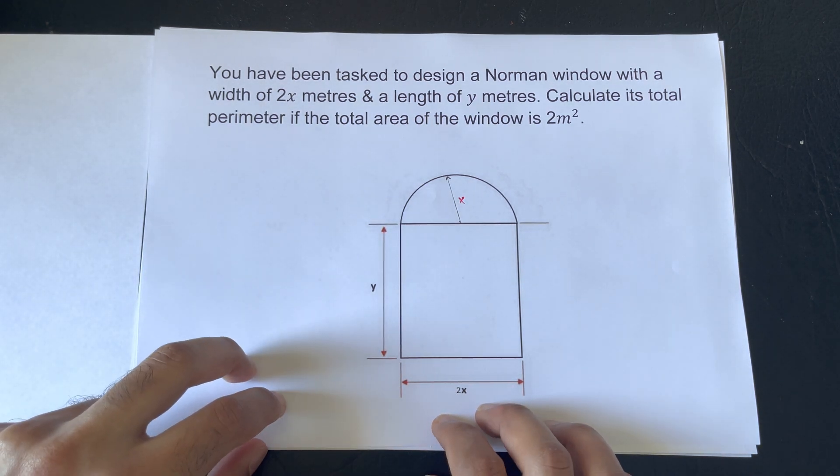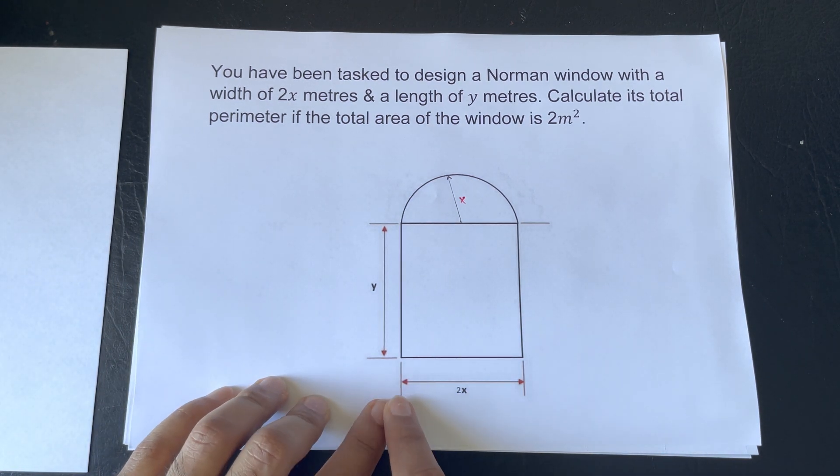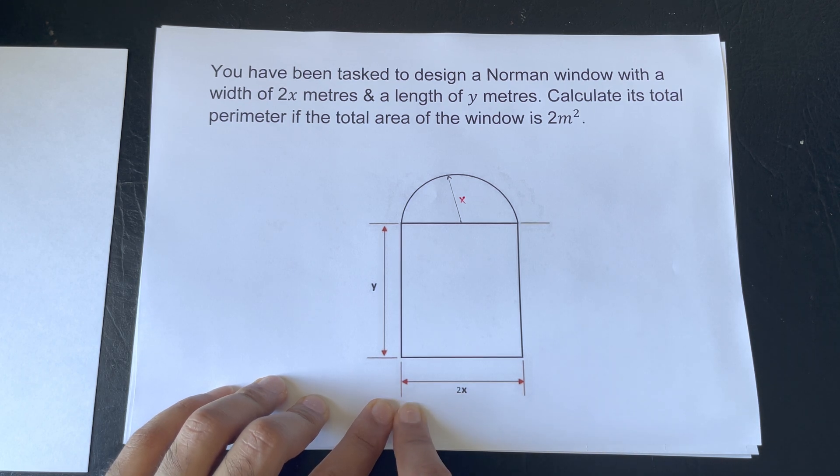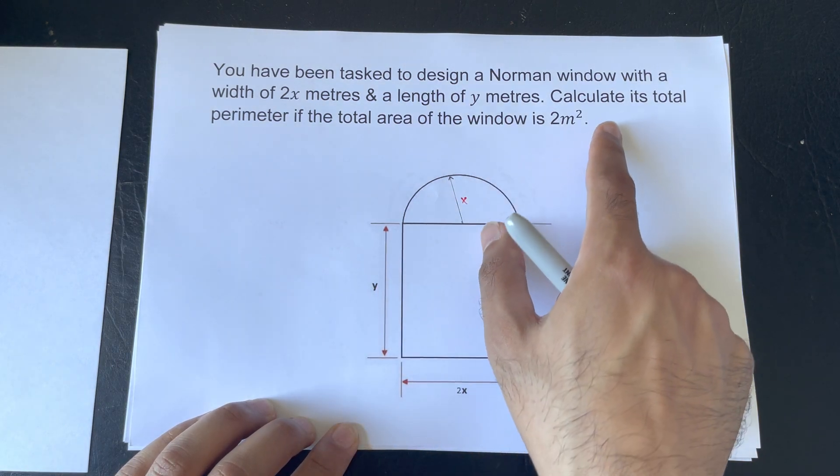And this will be our first step, is to draw a diagram. Okay, so it's got a width of 2 meters, a length of y, and the question asks, calculate its perimeter.